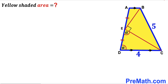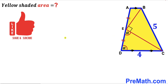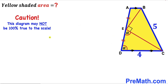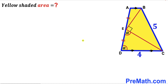These two angles are congruent, and our task is to calculate the area of this yellow shaded quadrilateral ABCD. Please keep in mind that this figure may not be 100% true to scale. Let's go ahead and get started — here's our very first step.